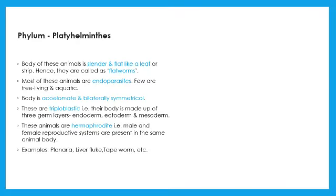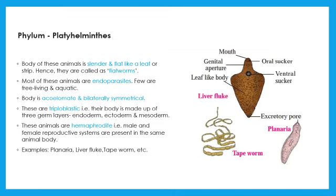Let us move to the next phylum, Platyhelminthes. These are multicellular, triploblastic, acoelomate animals having bilateral symmetry. The body is slender and flat-like, hence they are called flatworms. Most of them are endoparasites, that is, they live in the internal organs of the host. They are hermaphrodite — male and female reproductive organs are present on the same animal. Examples include planaria, liver fluke, and tapeworm.